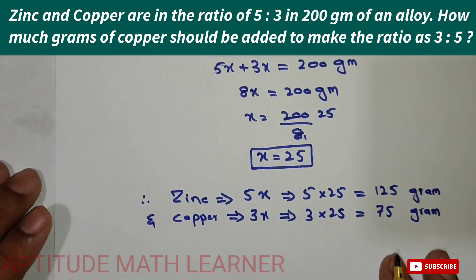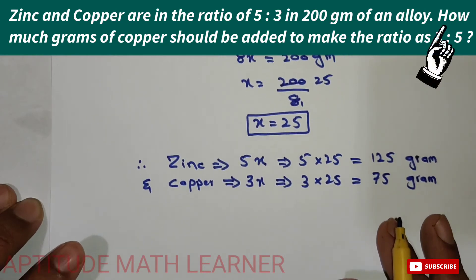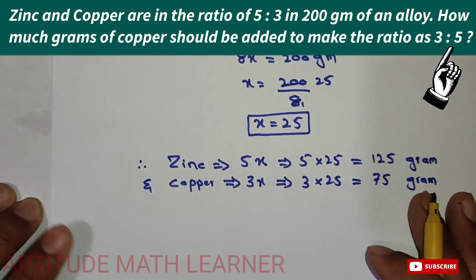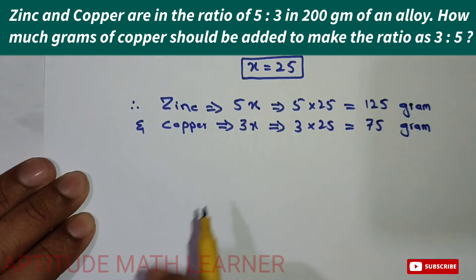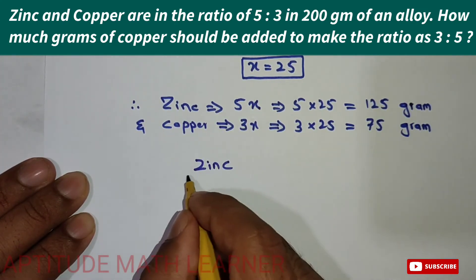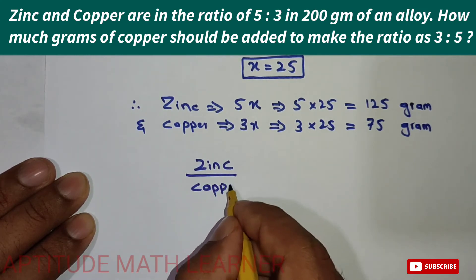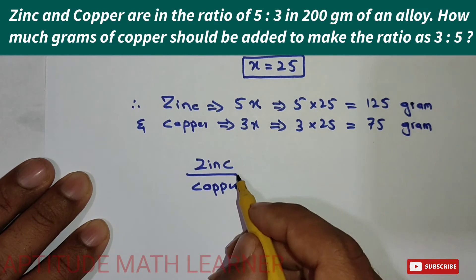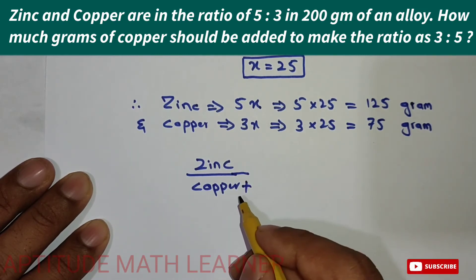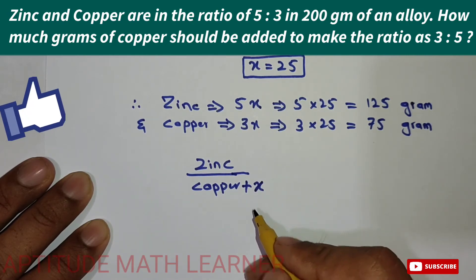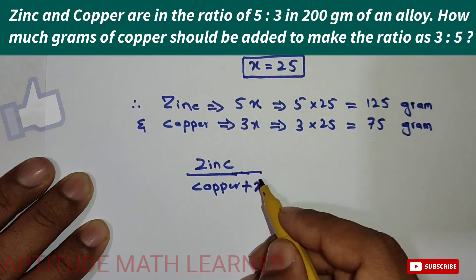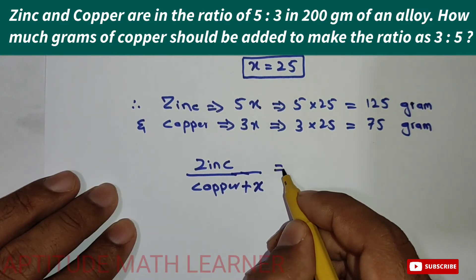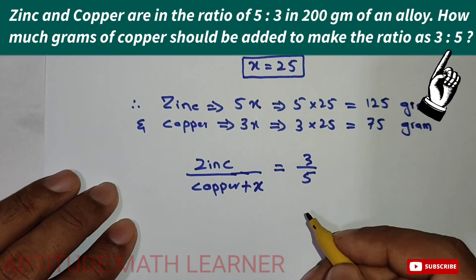The question asks how many grams of copper should be added to make the ratio 3:5. We now know zinc is 125 grams and copper is 75 grams. We take x as the amount of copper to add, and find x to achieve the new ratio of 3:5.